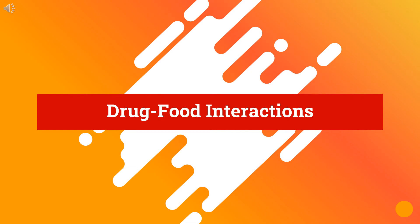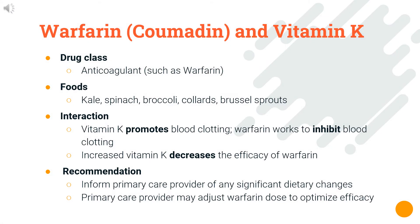Now let's get into the mechanisms of these interactions. Warfarin is an anticoagulant, also referred to as a vitamin K antagonist, used to prevent blood clots, treat deep vein thrombosis or pulmonary embolism, and help prevent strokes. Vitamin K is an important vitamin that helps blood clot and is found in foods like kale, spinach, broccoli, and other green leafy vegetables. Since vitamin K promotes blood clotting while warfarin works to stop it, increased vitamin K intake can reduce warfarin's effectiveness in preventing blood clots.